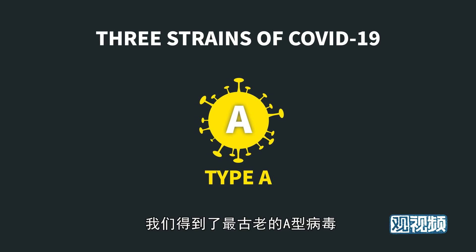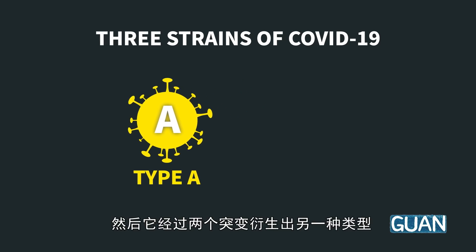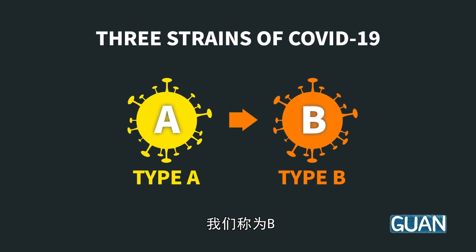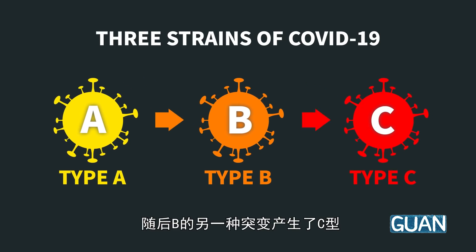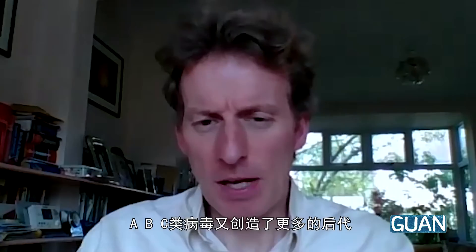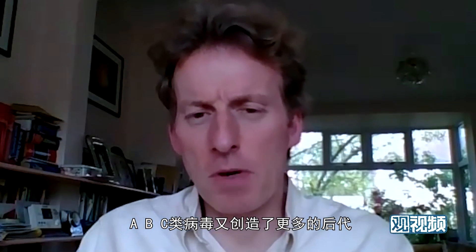The bat coronavirus is a suitable outgroup, and it was called A. From A, another type derives through two mutations — type B. Then there is another mutation leading to type C. These A, B, and C types in turn have created minor descendant daughter types.